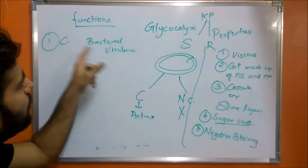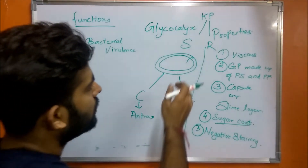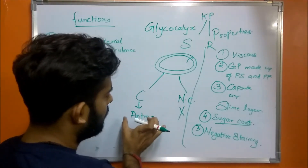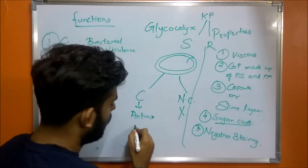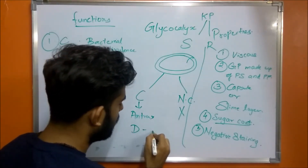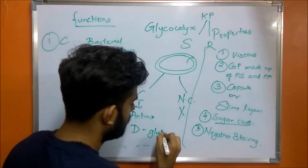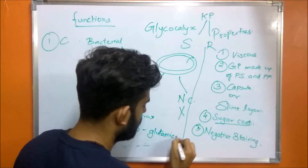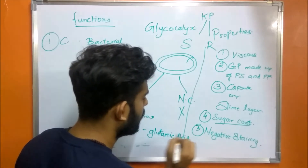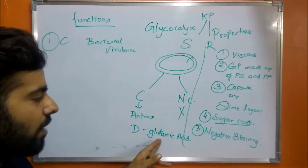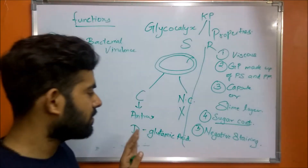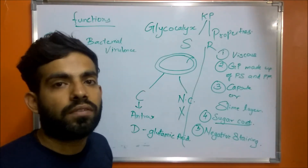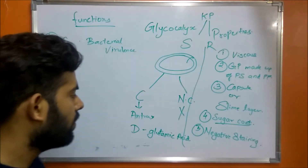The capsule of Bacillus anthracis is made up of D-glutamic acid. This D-glutamic acid is a type of D-amino acid, which is very unusually formed.